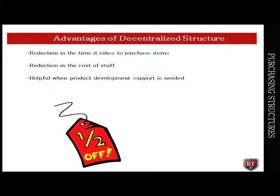Another advantage is a reduction in the cost of staff, because each department is responsible for their own purchases and there is no need to have a purchasing staff. Yet another advantage is that having a decentralized structure is beneficial when product development support is needed. Many times a purchasing department is focused on supporting the daily activities of the organization, with support needed equally among engineering, quality, and other departments that need to have purchases made.